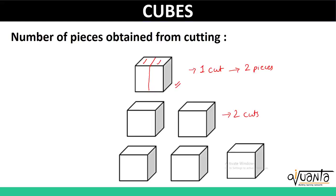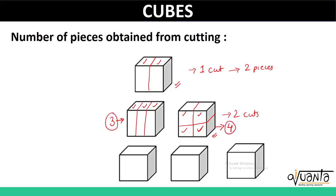Now let us try to make two cuts. Two cuts can either be made in the same direction, which gives us three pieces, or we can make two cuts in perpendicular directions. So we have two cuts here also, but in this case the number of pieces formed is four. So two cuts can lead to either three or four pieces depending on how they are made.